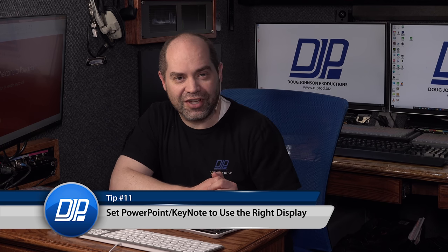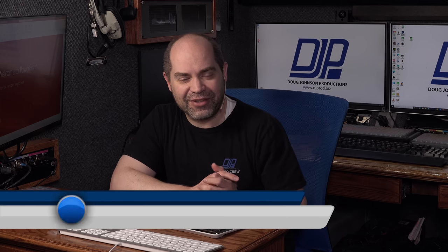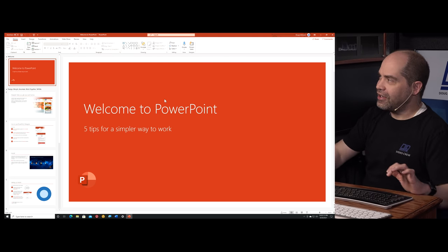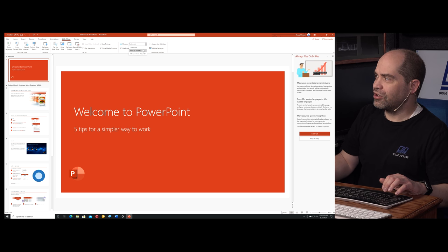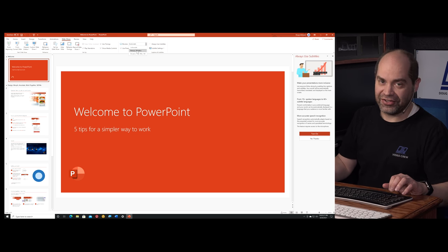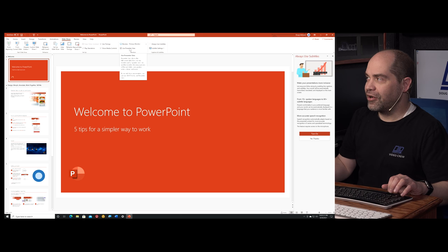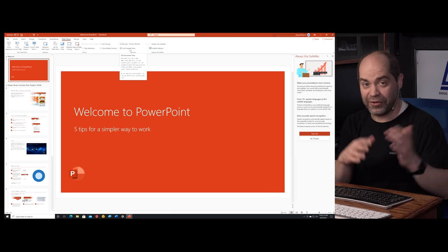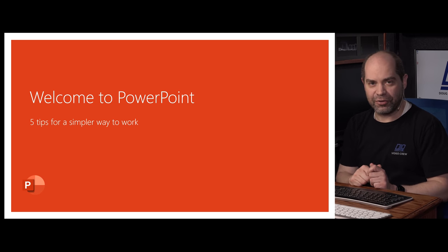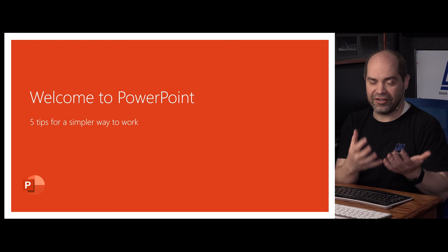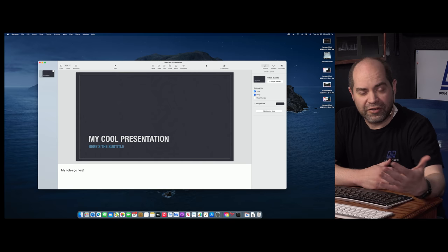Tip eleven: if your presenter is using Keynote or PowerPoint, make sure ahead of time that you're sending video to the right output. It happens all too often that someone plugs in and we get the notes view instead of the actual presentation. In PowerPoint on Windows, go to the Slideshow menu, find the Monitor dropdown, select the monitor you want for the actual presentation, and enable Presenter View for the other monitor. Press F5 to start and the presentation will be full screen on the correct monitor while Presenter View appears on the other.